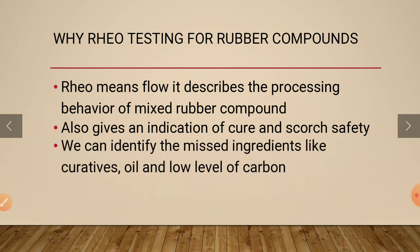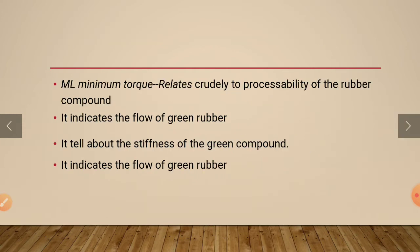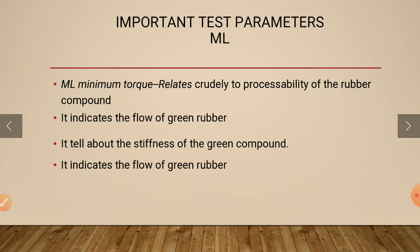We can identify missed ingredients like curatives, oil, and low levels of carbon. Important testing parameters referred to in rheo reports: minimum torque tells about the initial stiffness of the mixed compounds and indicates the flow of green rubber.